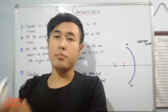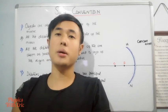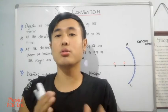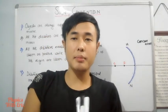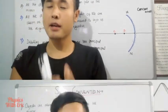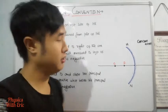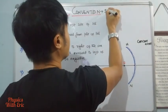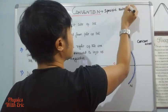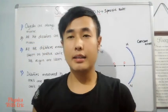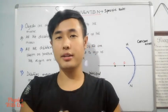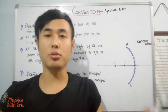We know that the image is formed at different positions depending on the object. We know the nature of the image. So, convention means a specific rule — just like you know the traffic rule: followers stay on the left side or right side. So this is what a specific rule means.